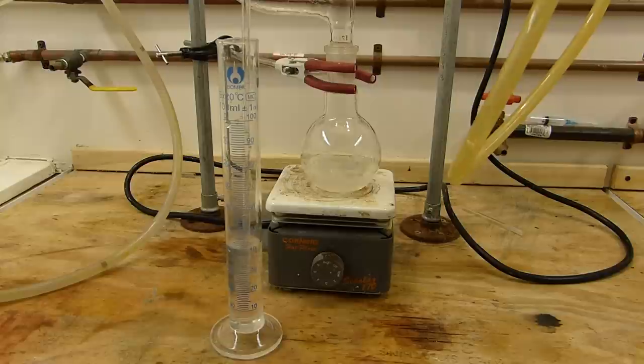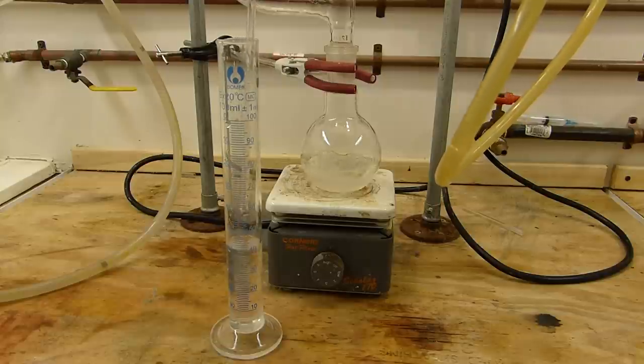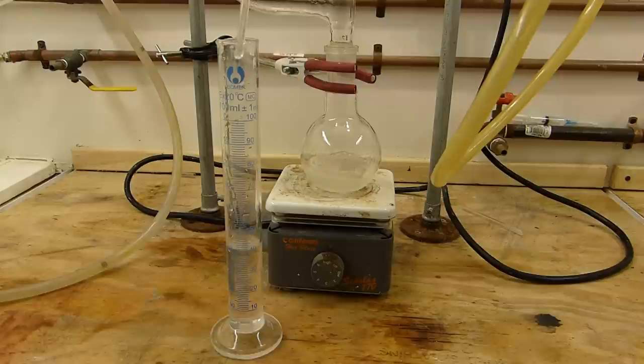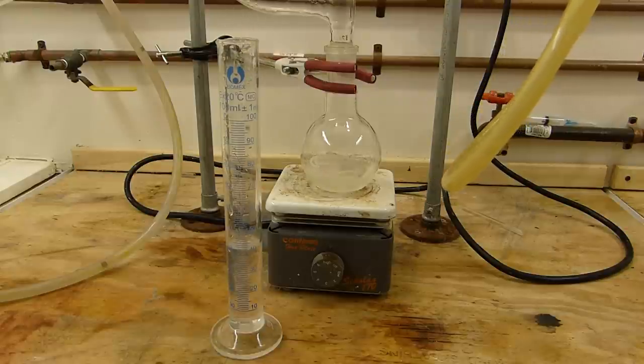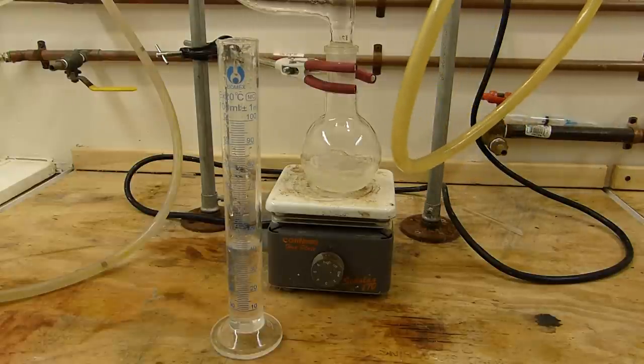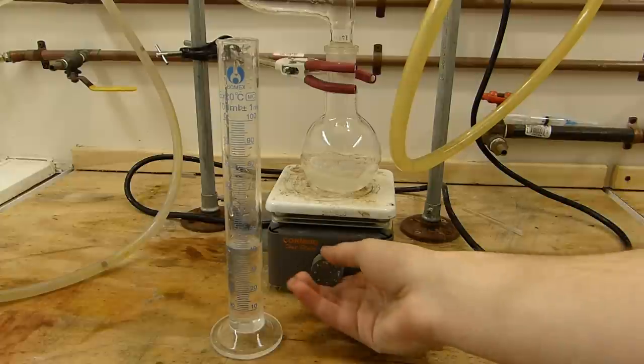You can see when gas generation starts to taper off, it'll start to climb the tube here. So we can simply pull it out, and this is just about done. We'll pull this out and leave this tube in a safe place somewhere in the fume hood so that we can pull the excess ammonia out and turn off the hot plate.